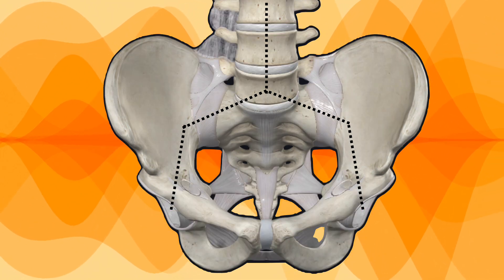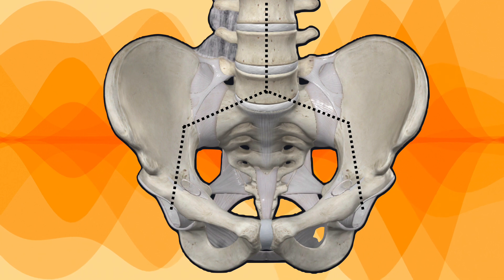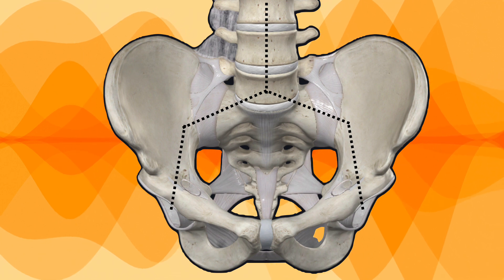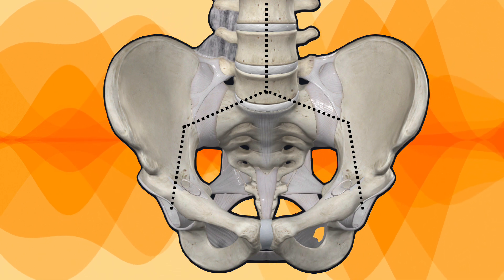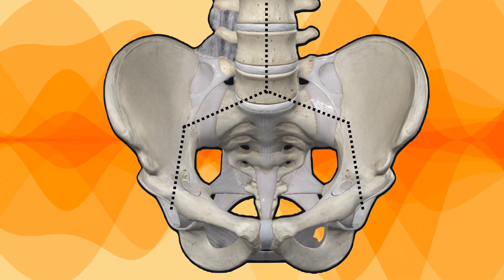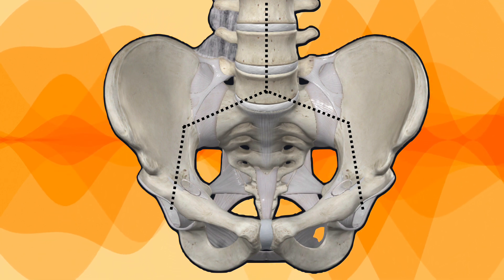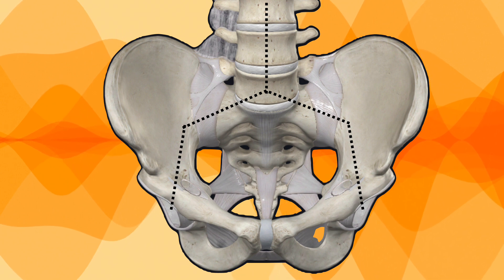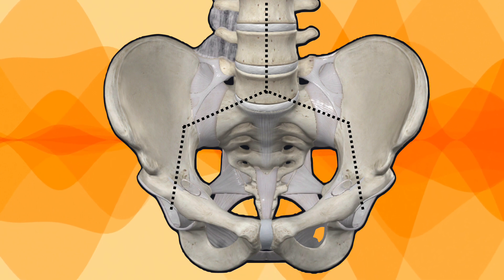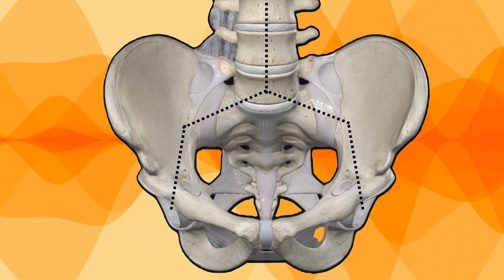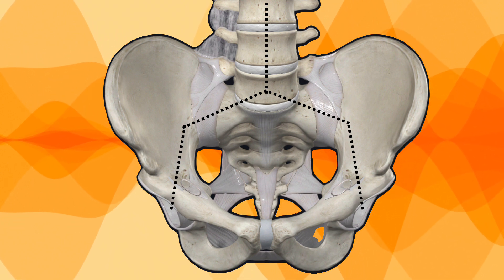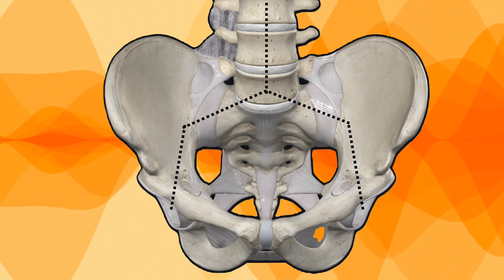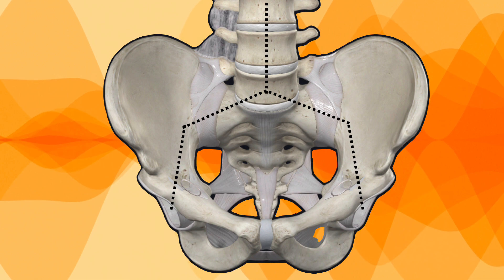This slide shows the role of the sacrospinous ligament. The sacroiliac ligaments play a very important role. If these ligaments are broken, we may have a problem in weight-bearing.